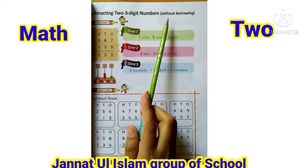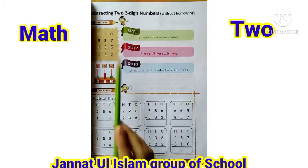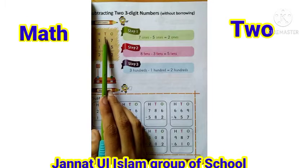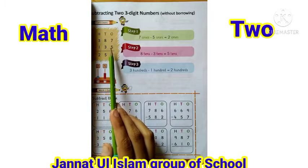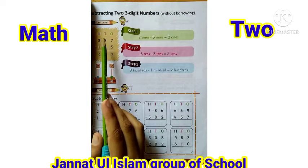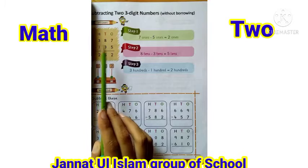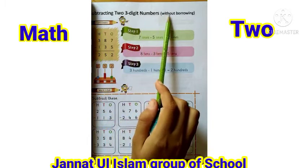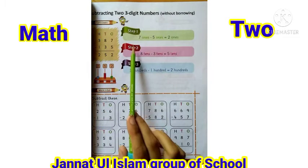Two three-digit number without borrowing — بیٹا, two three-digit number کا مطلب یہ ہوتا ہے۔ جیسے آپ کو question نظر آ رہا ہے، سب سے پہلے اوپر ones، tens اور hundreds لکھا ہوا ہے، نیچے ones کے نیچے بھی two digit، tens کے نیچے two digit اور hundreds کے نیچے بھی two digit۔ اسی کو ہم subtracting two three-digit numbers without borrowing کہیں گے۔